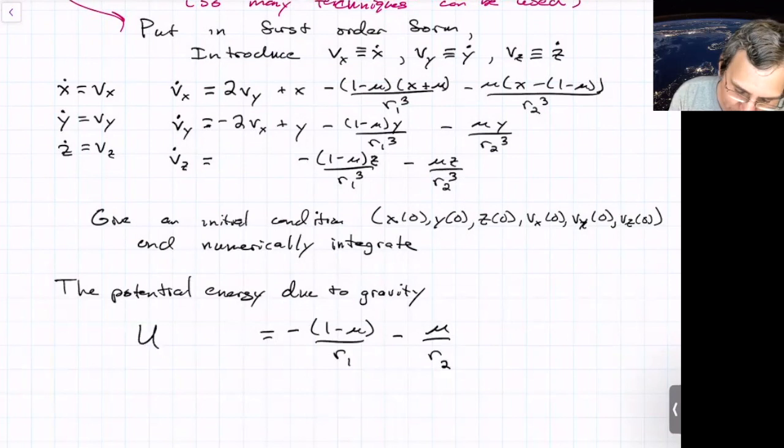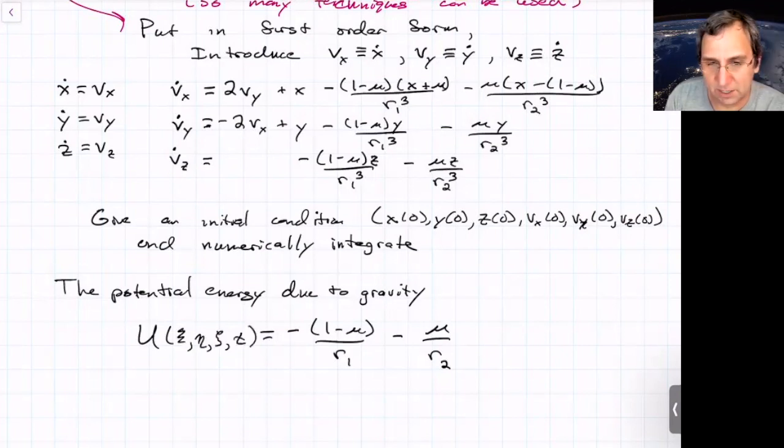We could be more careful and say, well, this is the potential energy written in terms of x, y, and z. If we had written the potential energy in the Newtonian frame, this would be chi, eta, zeta, and zeta. And then there'd also be time because time would show up explicitly in R1 and R2 tracking where M1 and M2 are with respect to the particle.